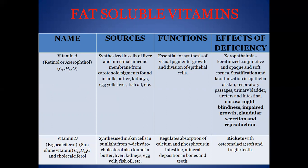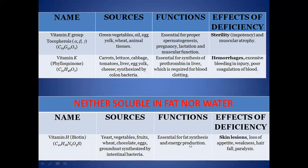The effects of deficiency of vitamin A include night blindness and impaired growth. Vitamin D is also called the sunshine vitamin. It is synthesized in the skin in sunlight from 7-hydroxycholesterol, and is also found in butter, liver, kidneys, egg yolk, and fish oil. It regulates absorption of calcium and phosphorus in the intestine and mineral deposition in bones and teeth. Its deficiency causes rickets and soft, fragile teeth.